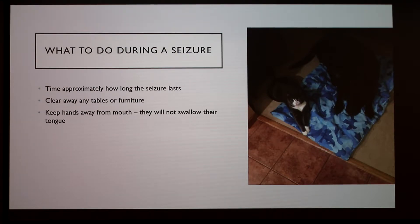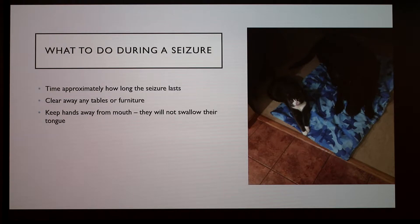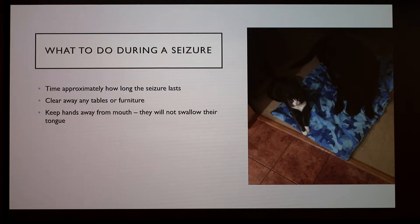What to do during a seizure: time approximately how long the seizure lasts. A seizure shouldn't last longer than two minutes, and it's easier to keep a timer on your phone rather than watching the clock, because seizures feel like they last a lifetime. You want to clear away any tables or furniture so the dog doesn't hurt himself. You want to keep your hands away from their mouth — a lot of people believe they'll swallow their tongue during a seizure, but you'll most likely get bitten rather than that happening.